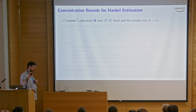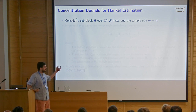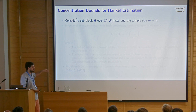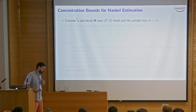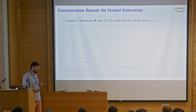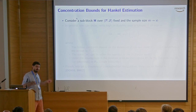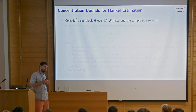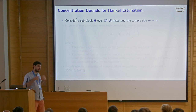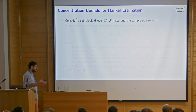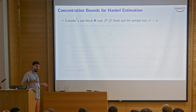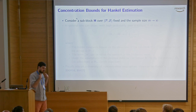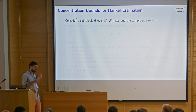Everything is set up except estimating the Hankel matrix. I ended the first part by showing how you estimate this Hankel matrix where you have data sampled from some distribution over strings or a dynamical system. These estimators typically just involve counting things over the data. This is one of the nice things about this approach: it's very efficient. It's not an iterative algorithm where you have to look at the data many times. You just look at the data once and get your Hankel matrix.